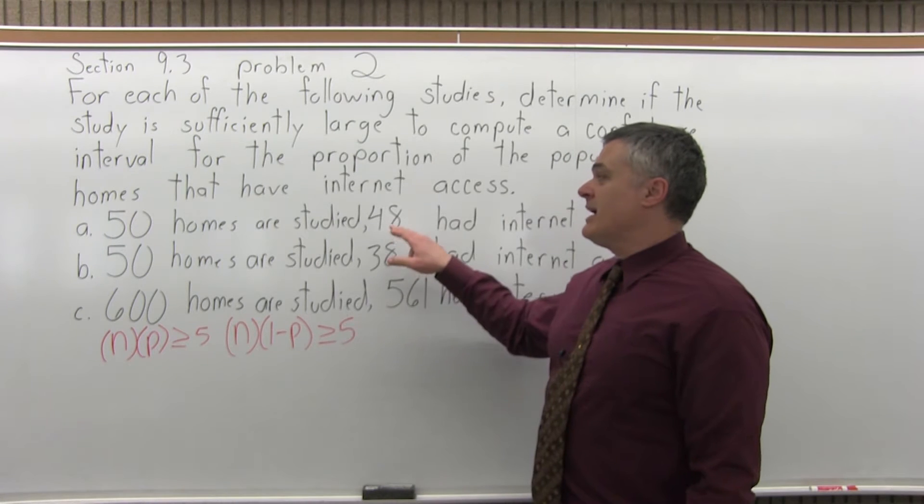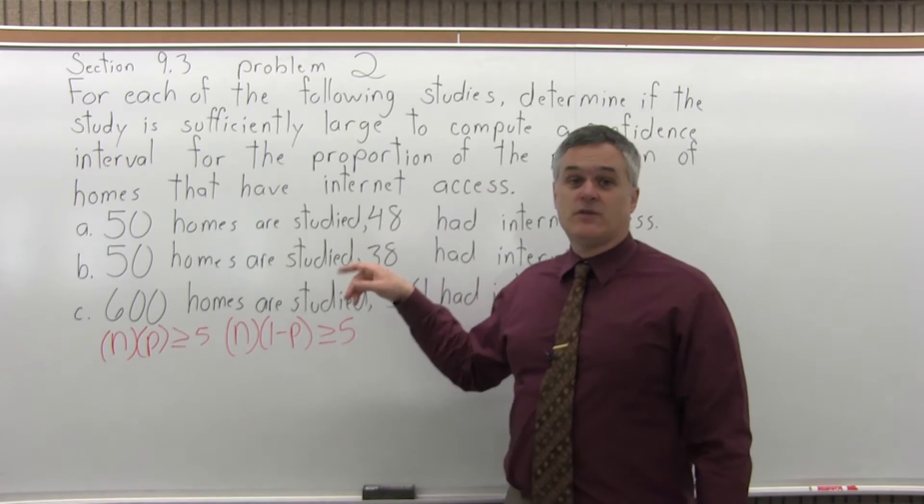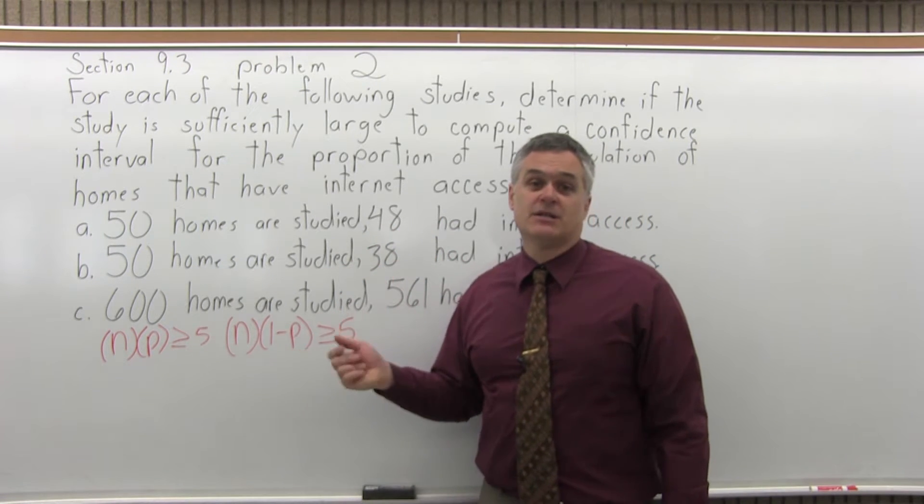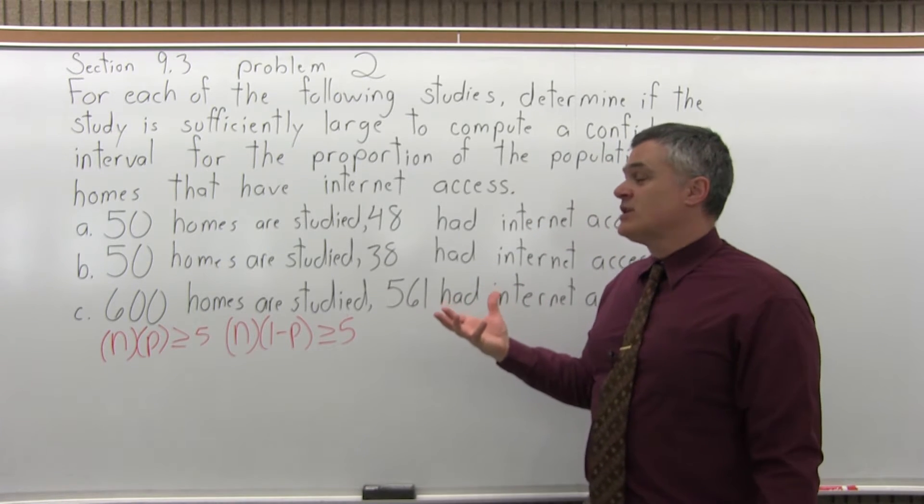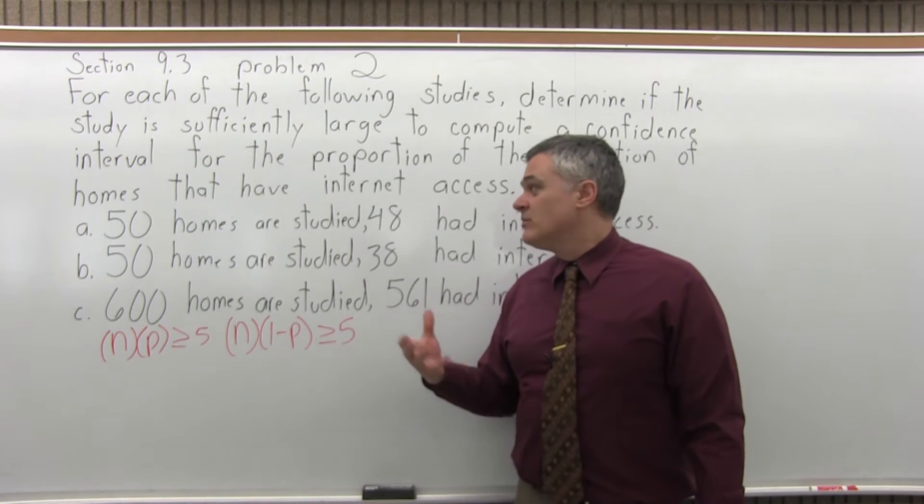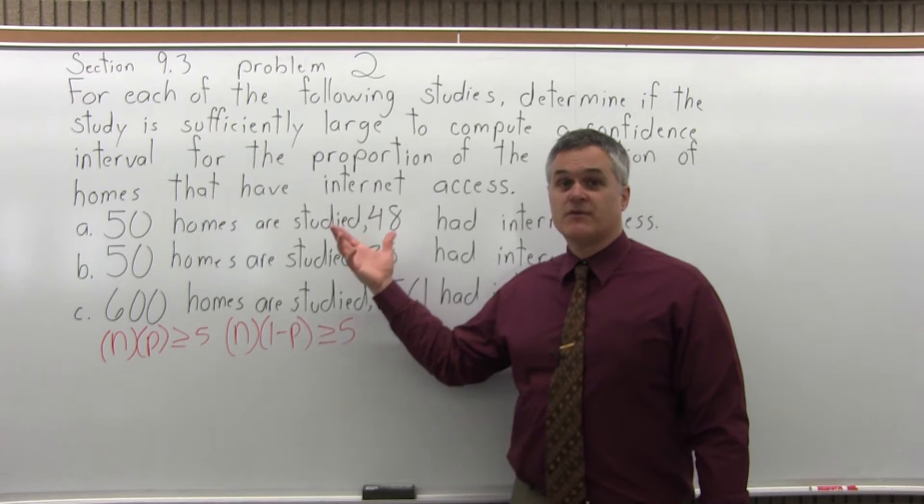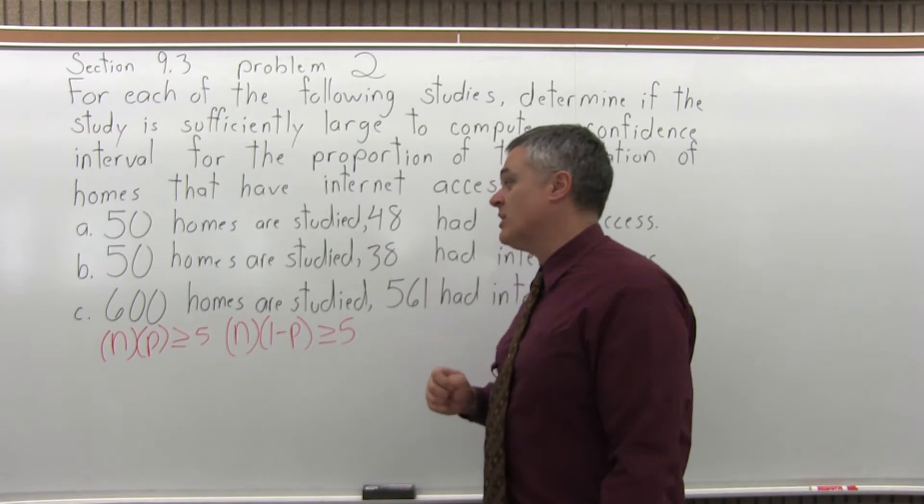So, for part A, 50 homes are studied. 48 of those 50 homes had internet access. So, is that study large enough? Can we make a confidence interval for the population proportion?